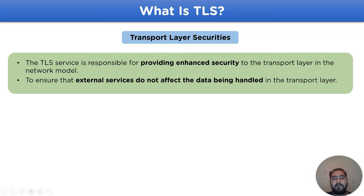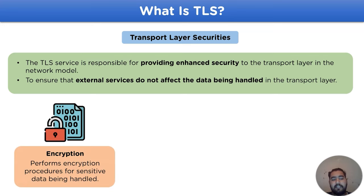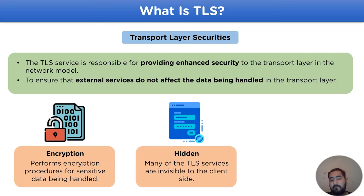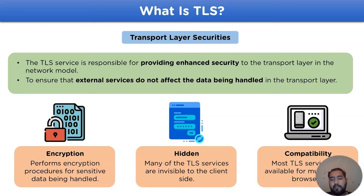Some of the TLS services in the transport layer include: encryption, which performs encryption procedures for sensitive data being handled in the layer; hidden services, where many TLS services are invisible to the client side and are only available to the transport layer for use in data; and compatibility, where most TLS services are available for multiple web browsers and are compatible with multiple devices.